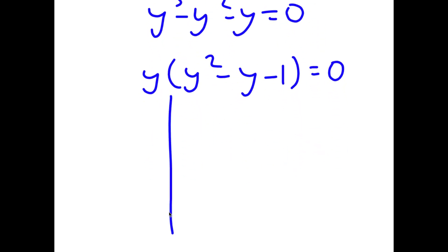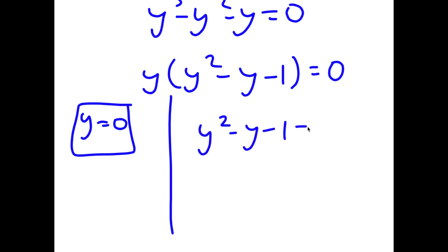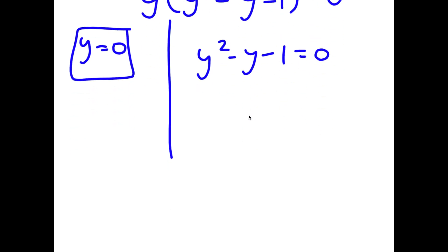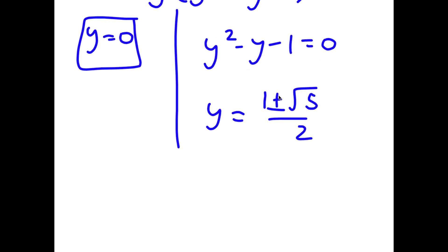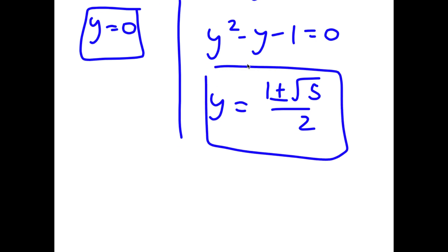So this gives me two equations. I have y is equal to 0, which is a solution of y, and I have y squared minus y minus 1 is equal to 0. To solve this I would have to use the quadratic formula. Without going through all of that, if I solve this I should get that y is equal to 1 plus or minus the square root of 5 over 2. So these are two more solutions of y.